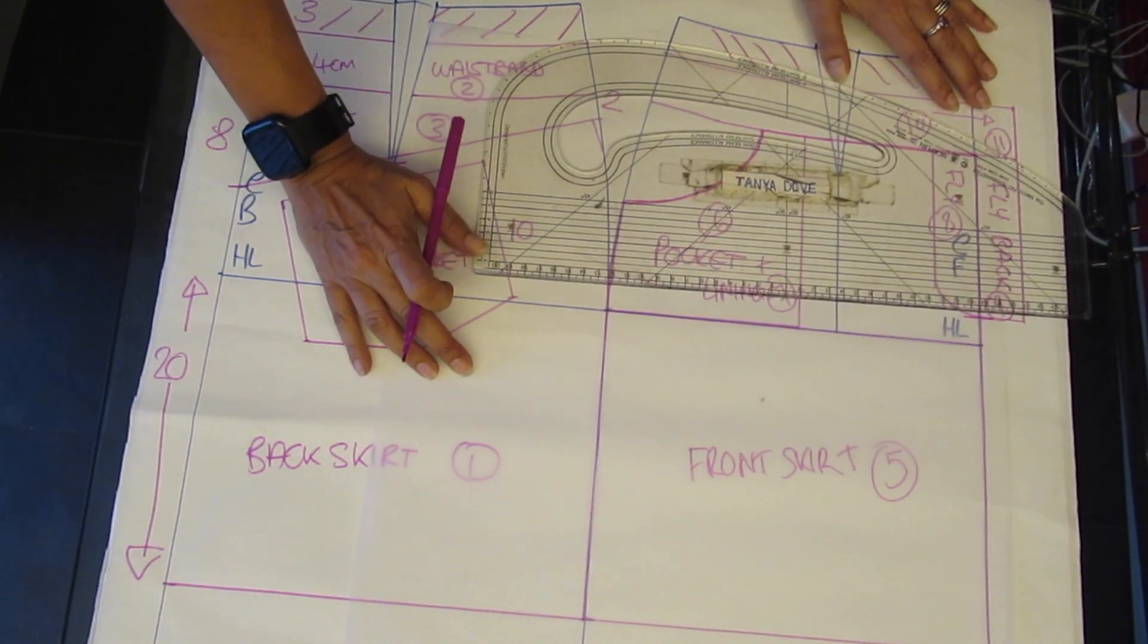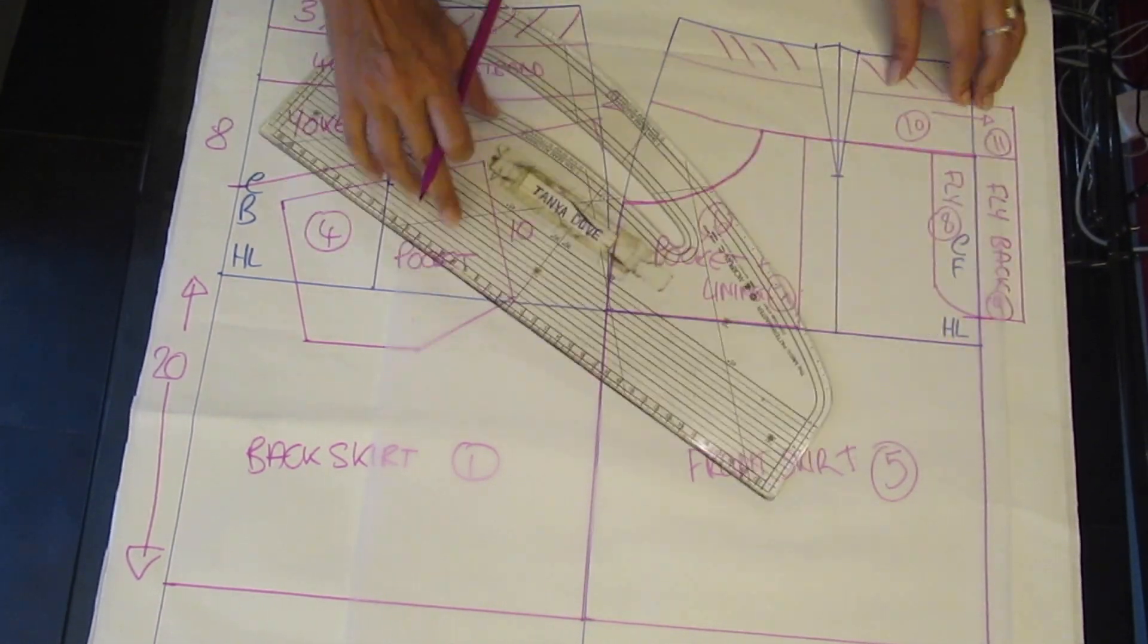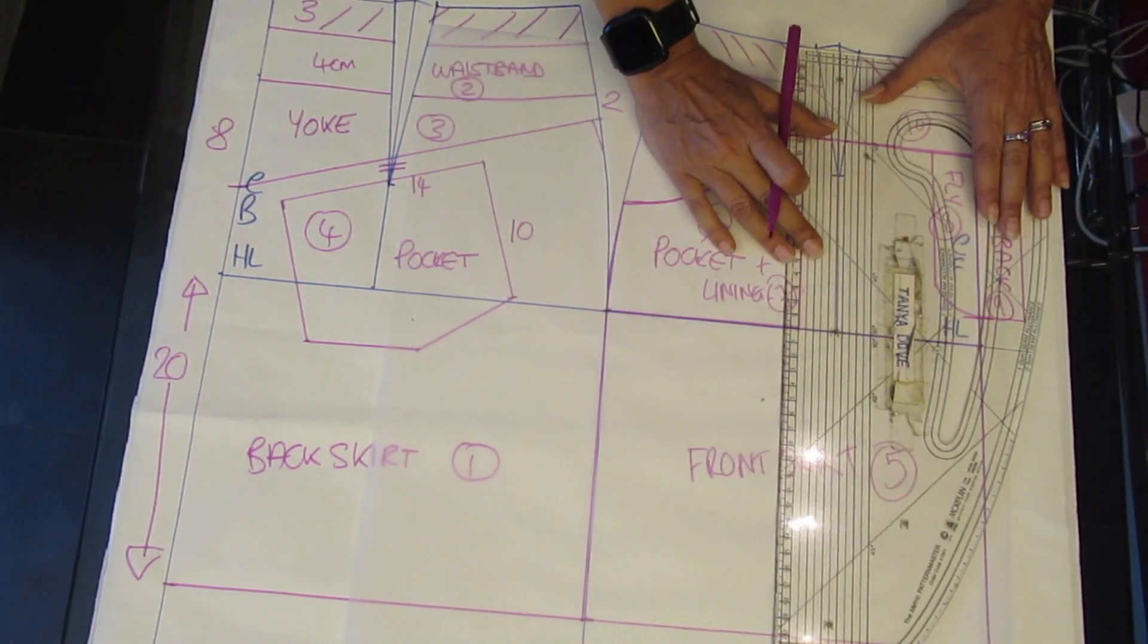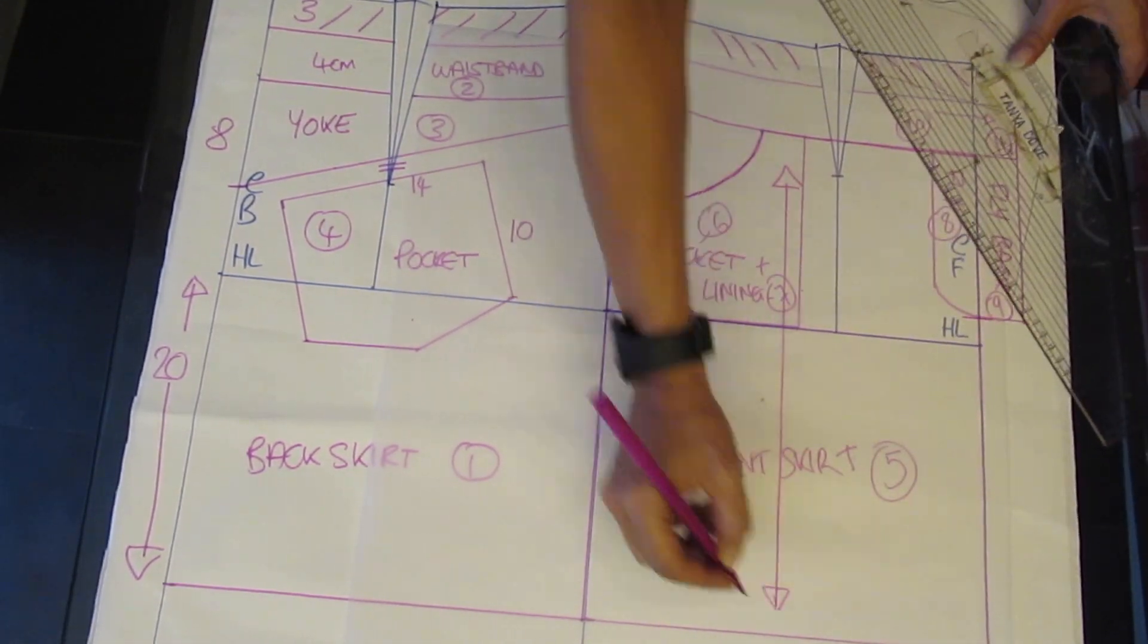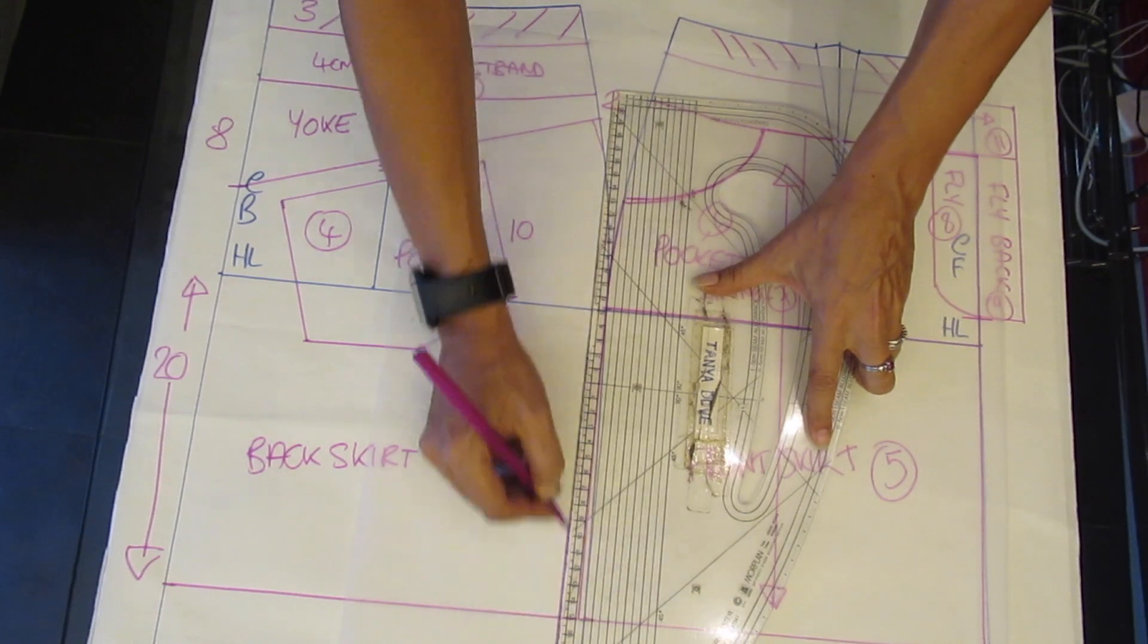Don't forget to draw the notch position on the centre front which is where the fly will come to. And the grain line again parallel to the centre front.